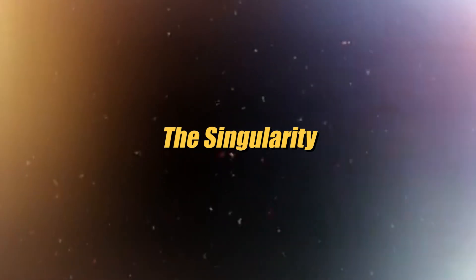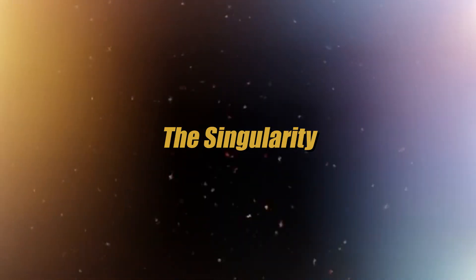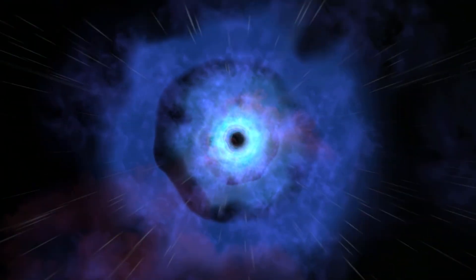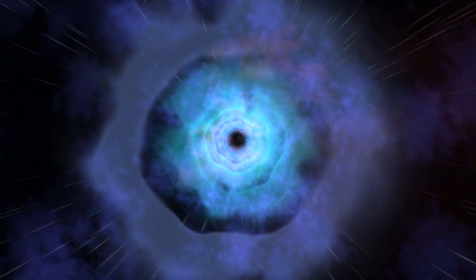Finally, the third layer is the singularity. This is where everything that enters the black hole is astronomically compressed into a point of infinite density. The singularity is a point in space-time where the laws of physics as we know them break down. You're probably wondering what lies beyond the third layer called the singularity, right?